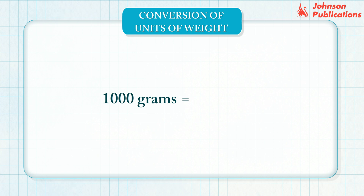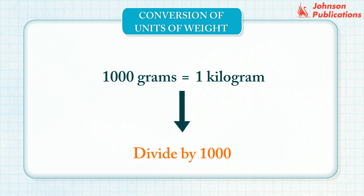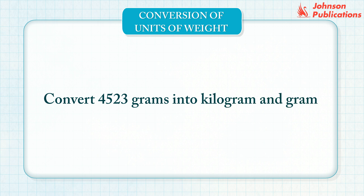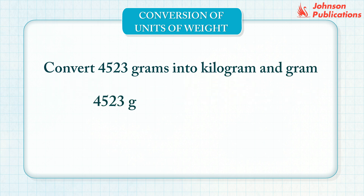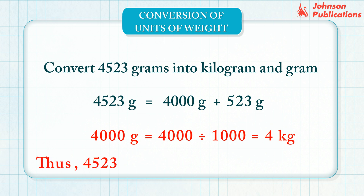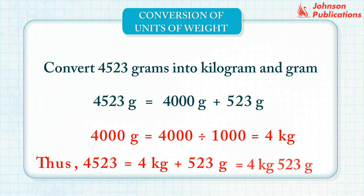We know that 1,000 grams equals 1 kilogram. To convert grams into kilograms, divide the grams by 1,000. Let us convert this value into kilograms and grams. This value equals 4,000 grams plus 523 grams. Divide 4,000 grams by 1,000. Thus, 4,523 grams equals 4 kilograms, 523 grams.